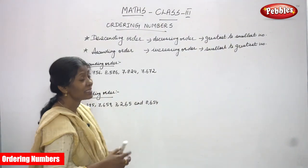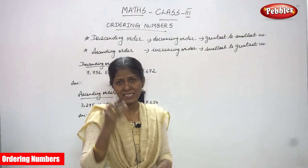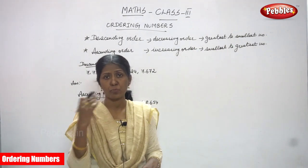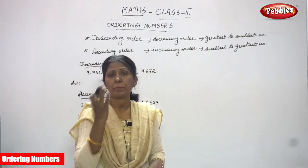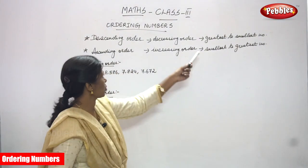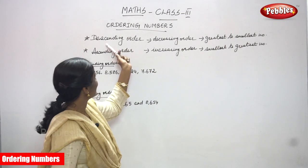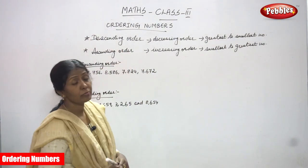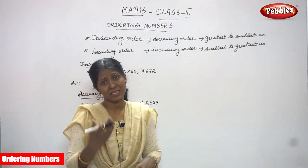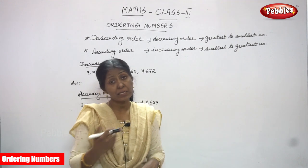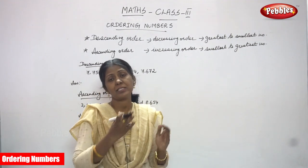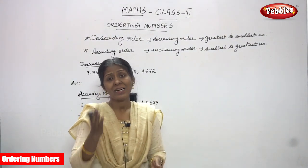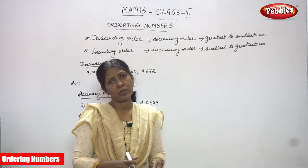Descending means you have to arrange the numbers in decreasing order — that is greatest to smallest, or biggest to smallest. That is descending order. Ascending order means we have to arrange the numbers in increasing order, that is smallest to greatest. So descending means decreasing order.